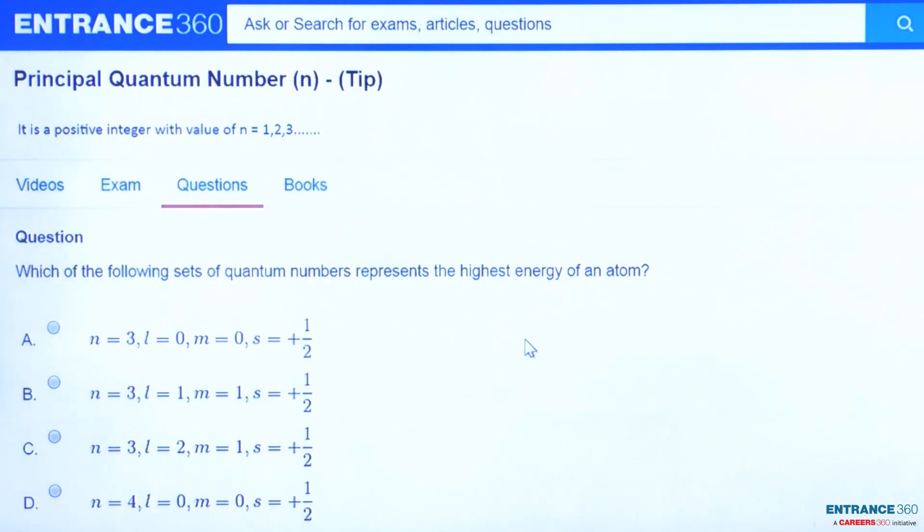Hello students, now we are going to discuss a question from JEE Main 2007. This is a question from the chapter Atomic Structure. In this question we have to find the correct set of quantum numbers which have the highest energy for this atom. These are the options we have: A, B, C, D.